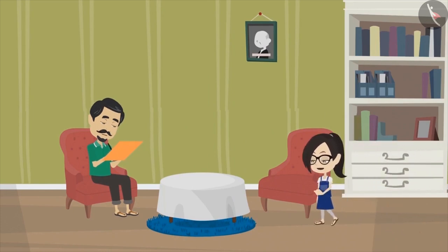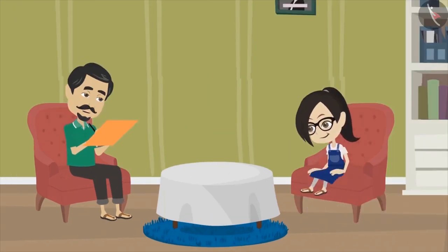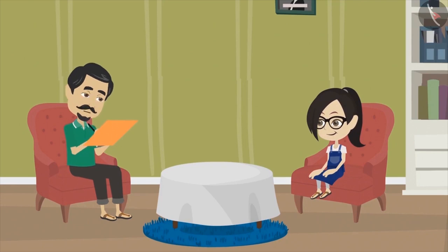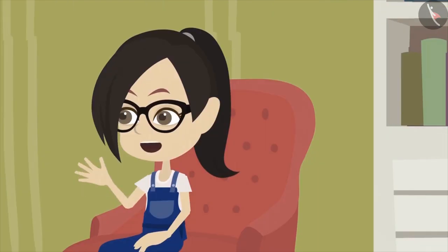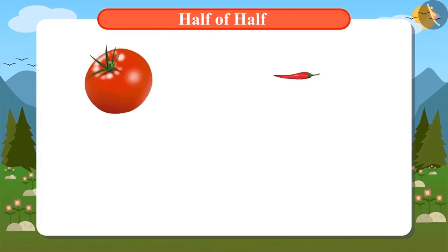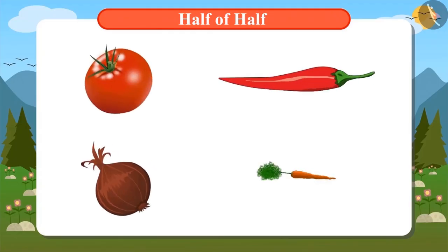What are you doing, Daddy? This time I am thinking of planting four different crops instead of one in our field. And what are they? Tomato, chilli, onion and carrots.